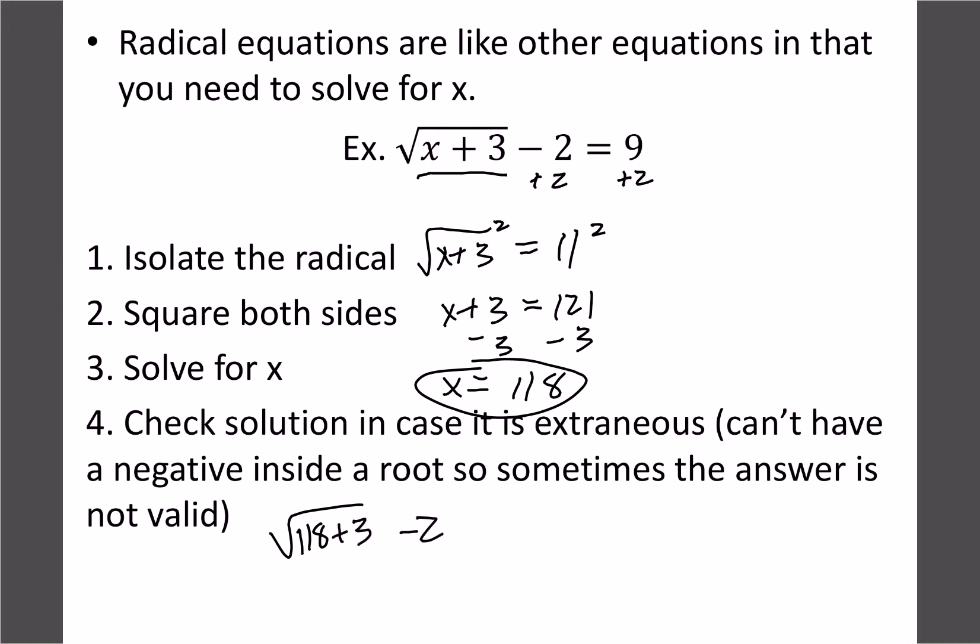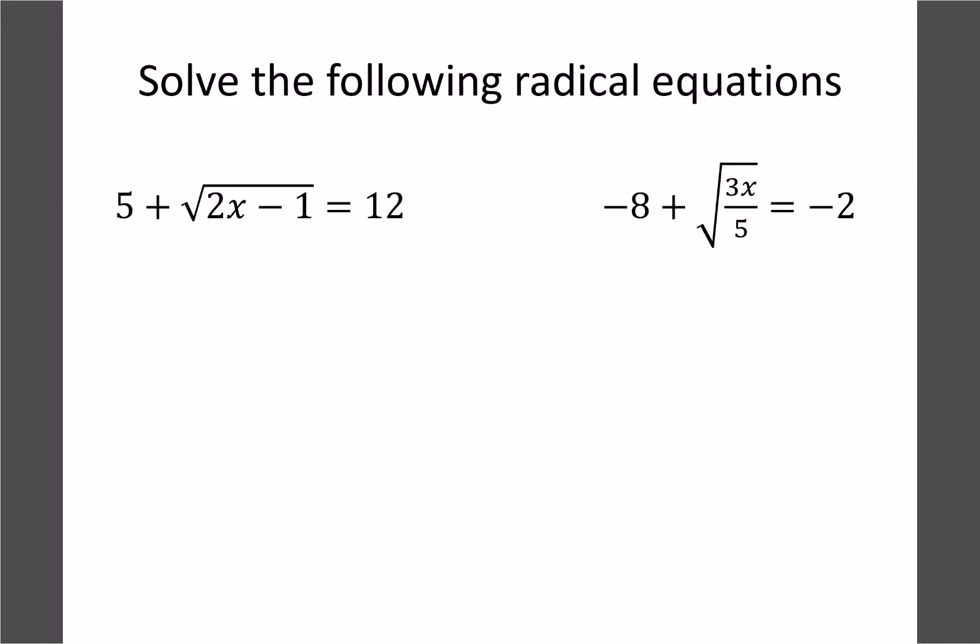Sometimes with square roots, you'll get an answer that doesn't work in the equation, which we call extraneous. So you just want to make sure that it's actually a legitimate answer. In this case, if we put the 118 in, we get square root of 121, square root of 121 is 11, 11 minus 2 equals 9. That's good. So it's worth the time, just do a quick double-check, and then you can see if your answer is valid or not.